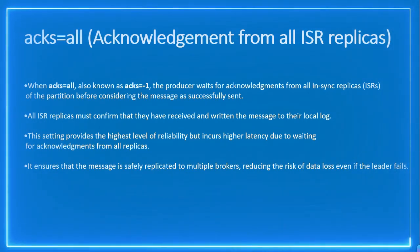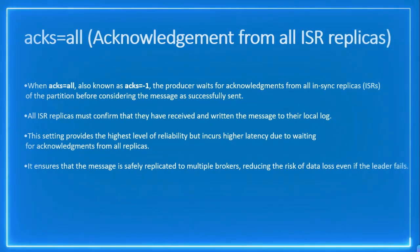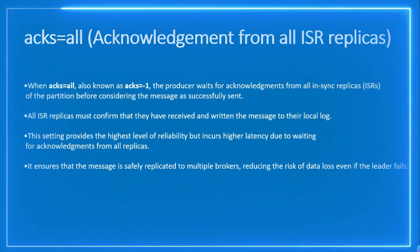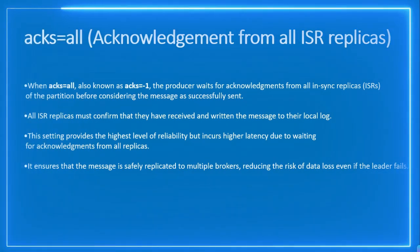In summary: acknowledgement equal to zero gives the best performance but risks message loss; acknowledgement equal to one gives a balance between performance and reliability; acknowledgement equal to all or minus one gives the maximum guarantee that messages have been received with no data loss, but performance will be degraded. That's all for this video — if you liked it, please subscribe to the channel.